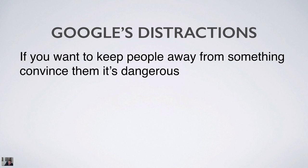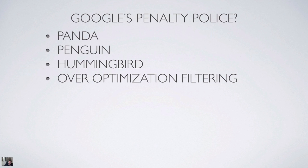Google is all too happy to have people distracted from anything that has to do with manipulating search results in a way that doesn't provide the best result to their audience. They prefer to have things picked and done in their way. Google has a number of things that penalize websites — you could call them the police force — and they are commonly known by names like Panda, Penguin, Hummingbird, and various optimization filtering mechanisms.